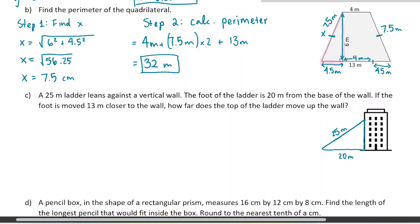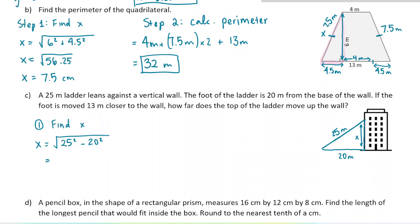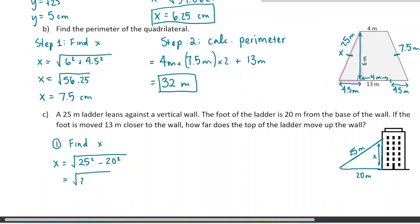Let's find this distance X first — this is the initial height up the wall. Step one: find X. X is going to be the square root of 25 squared minus 20 squared, because it's one of the legs so we use subtraction. 25 squared minus 20 squared equals 225. The square root of 225 is exactly 15. So originally the ladder is 15 meters up the wall.